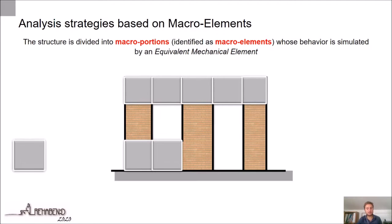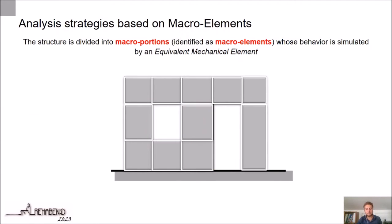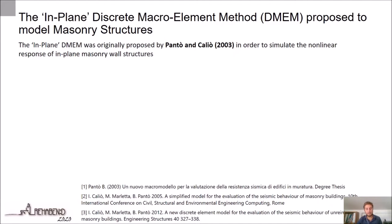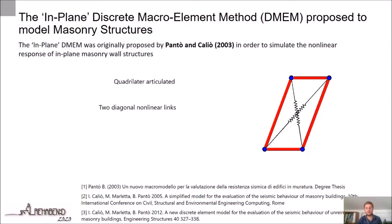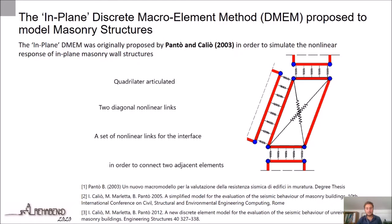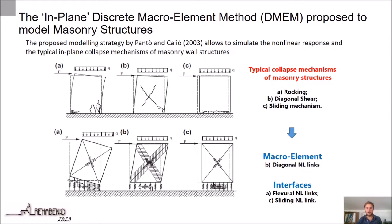Another strategy to model masonry structures is based on the discrete macro-element method. In this case, the masonry is divided into macro-portions, identified as macro-elements, whose behaviour is simulated by an equivalent mechanical element. This equivalent mechanical element can be represented by a quadrilateral articulated frame, with two diagonal links introduced to simulate the non-linear shear deformability of the masonry, and a set of non-linear links for the interface, in order to connect two adjacent elements. The macro-element is capable of describing the main failure mechanisms of masonry elements, namely flexural failure, shear diagonal failure, and shear sliding failure.